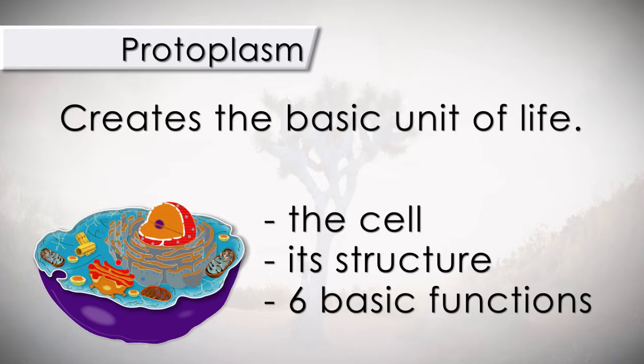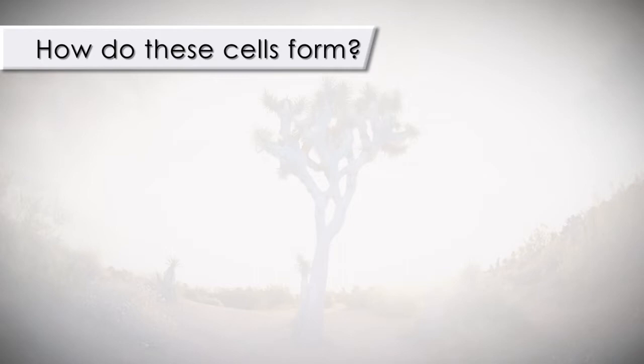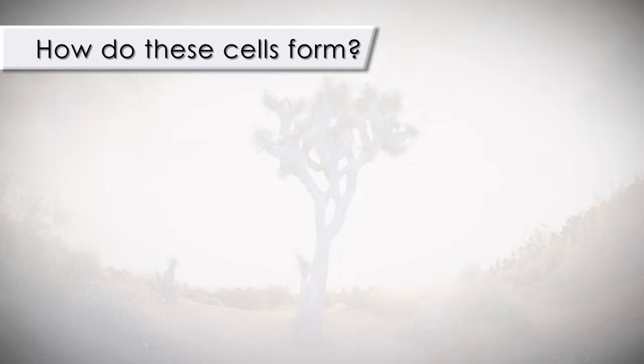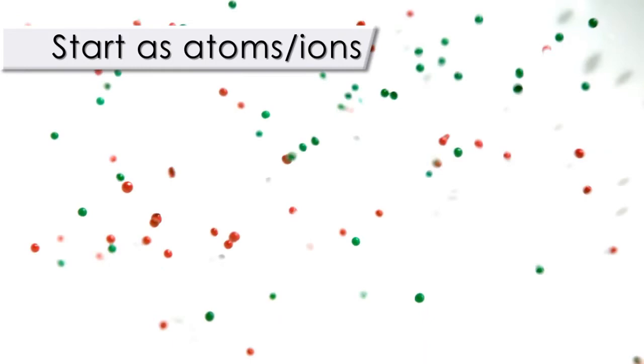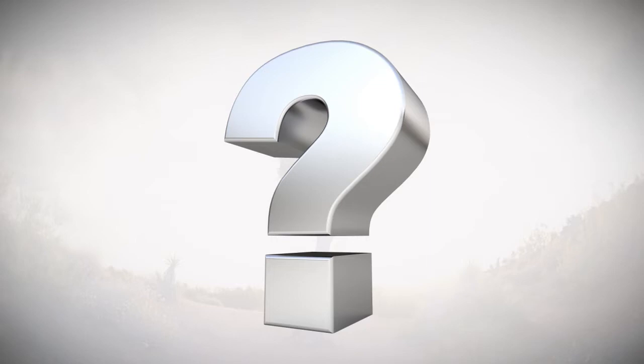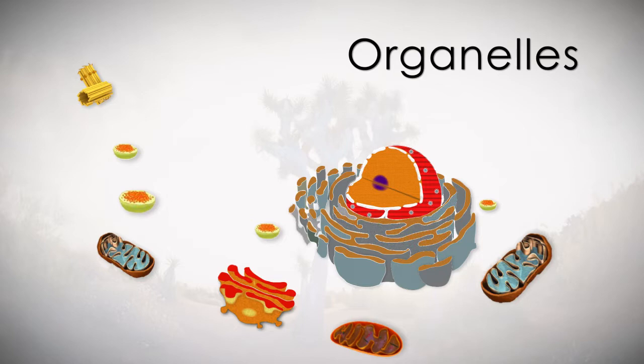It is important to know, according to science at least, that they started out as atoms or ions such as the ones found in the protoplasm. Then they became molecules — a composite of atoms or ions exchanging nutrients such as water, sugar, and proteins. Then, under a scientifically unknown process of life, organelles were formed, each with a specific assigned function, such as the mitochondria and the nucleus.